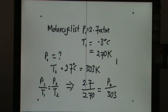So you could solve this by doing P2 equals 2.7 over 270 times 303. So you should be able to get 3.0 atmospheres.